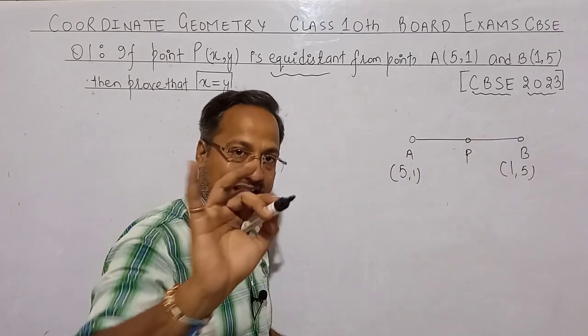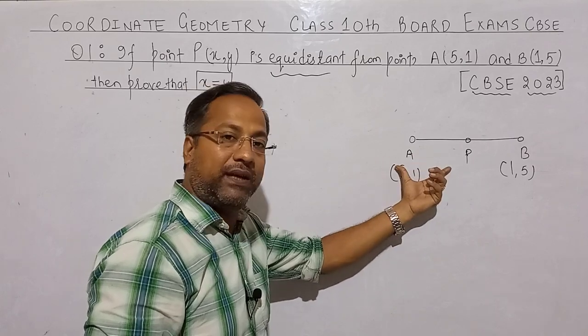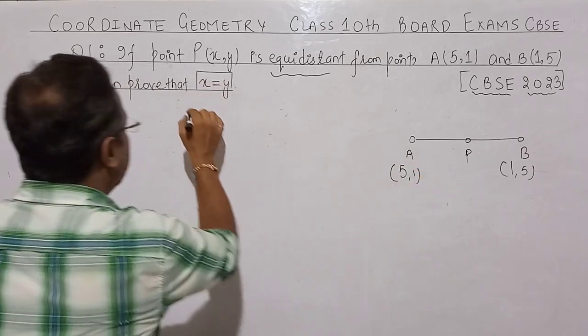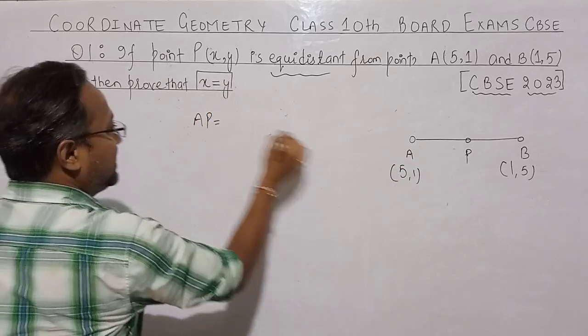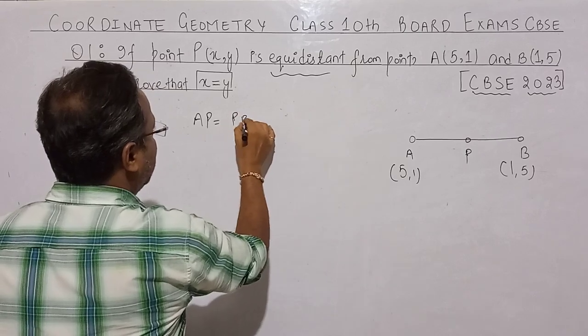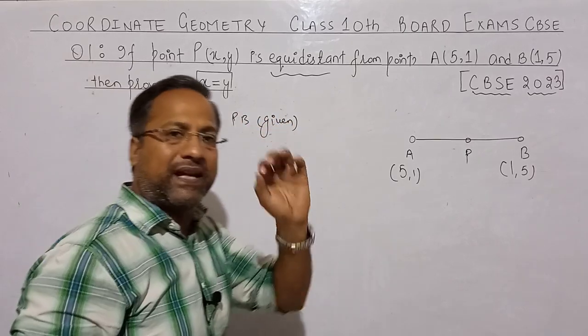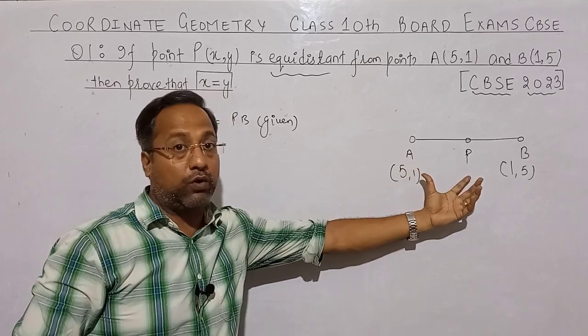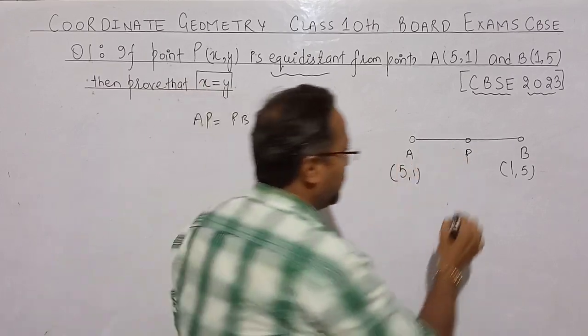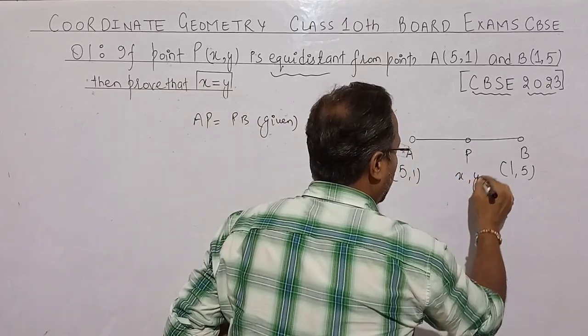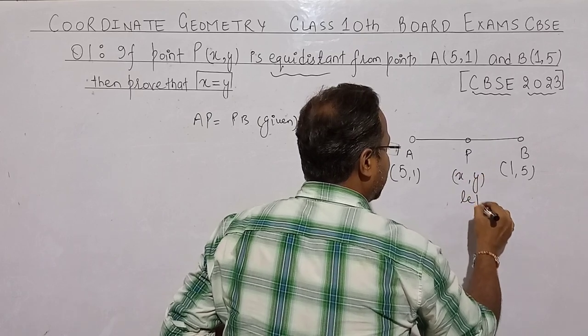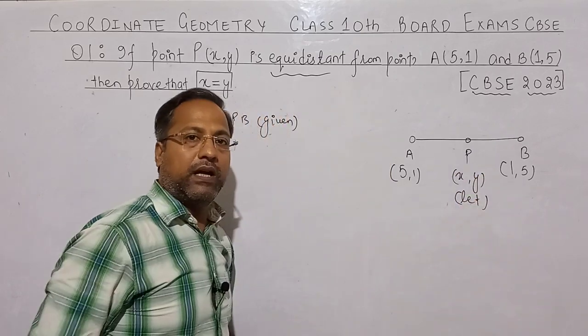The distance from P to A and P to B is equal. If you make a figure, the confidence level increases. Now P coordinates we have left as (x,y). Now distance formula.